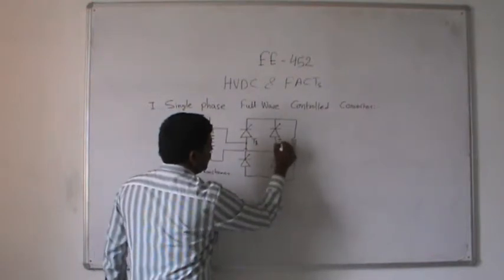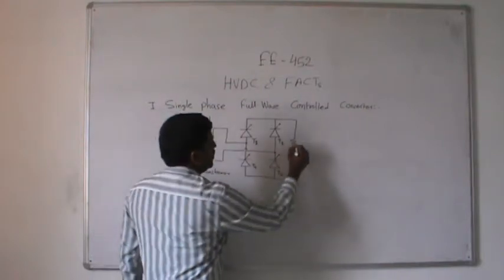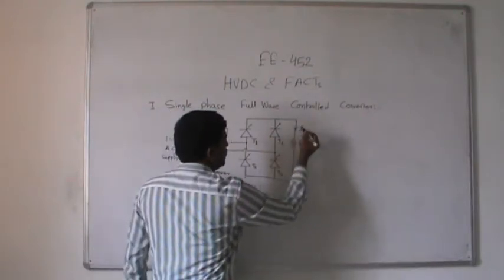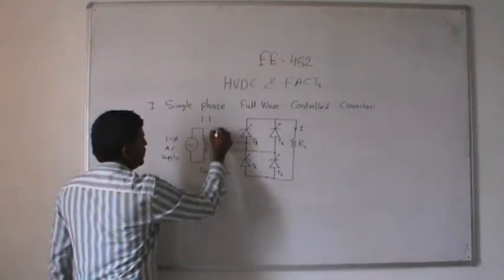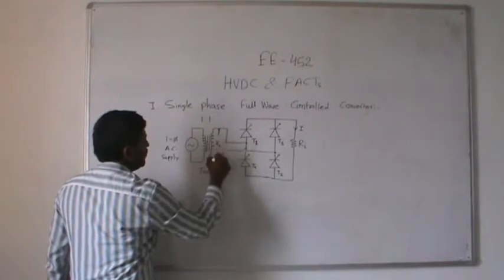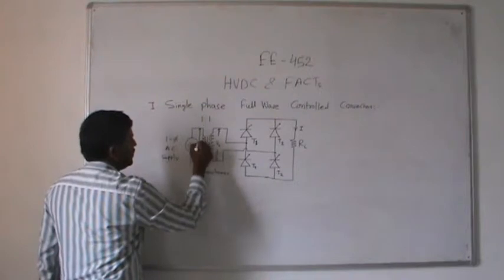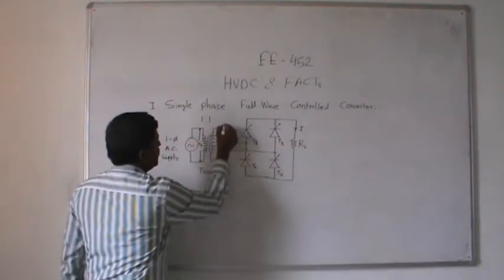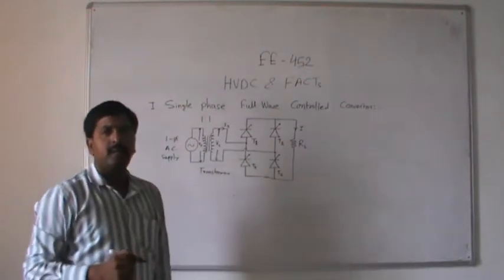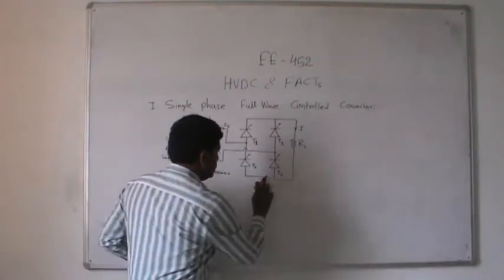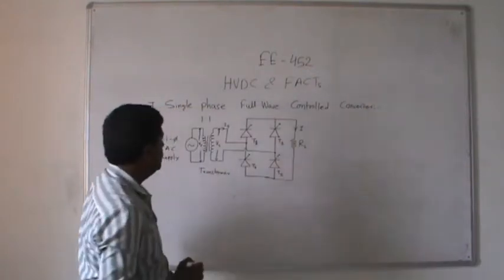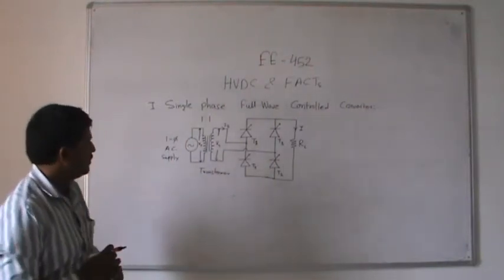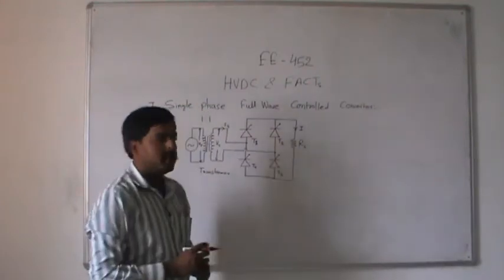The circuit has four SCRs: T1, T2, T3, and T4. There is a resistive load connected, with current flowing through the load denoted as I. This is the secondary side of the transformer, with the primary side and the secondary winding labeled as IS. So this is the schematic diagram of a single-phase full-wave controlled converter having four SCRs and a resistive load.